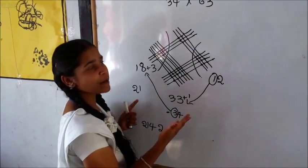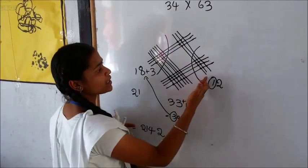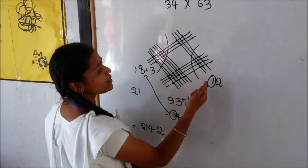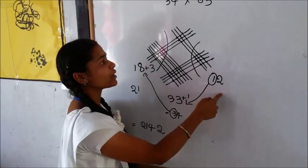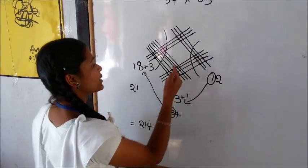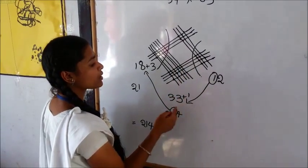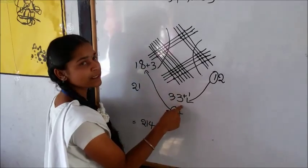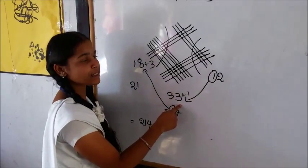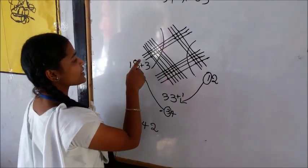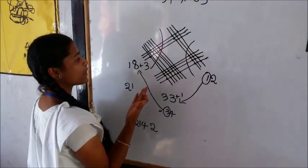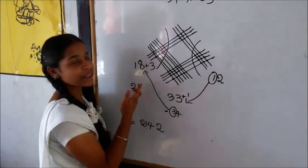We divide it into some parts. In the first section, the intersections are 12, so the result is 12. In the second section, the intersections are 13, so the result is 33. In the third section, the intersections are 18.